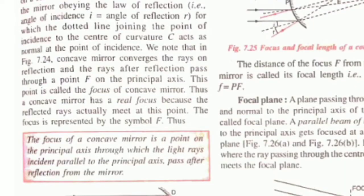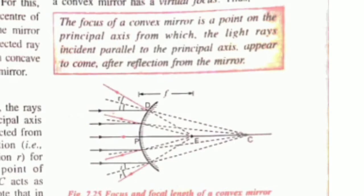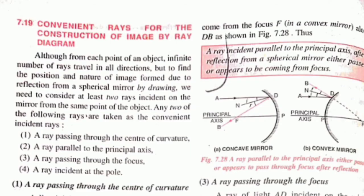The next term is focus and focal length. When parallel rays fall on the mirror along the principal axis, they converge at a point — that point is the focus. For a concave mirror the focus is in front, and for a convex mirror the image is virtual so the projected rays reflect back and meet at a point called the focus. This topic is very important because on this basis you will make ray diagrams.